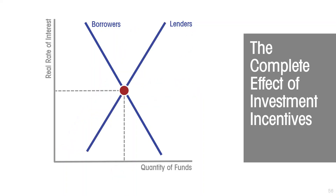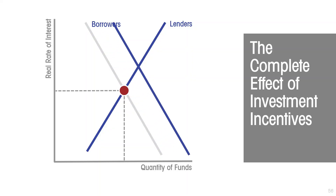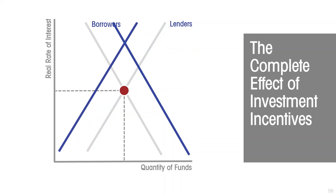These two exercises are not unrelated. If the government foregoes tax revenue to incentivize private investment and then must pay for that fiscal gap by going into the market and taking savings to finance the loss of tax revenue, then what ultimately happens to the total amount of investment is unclear.